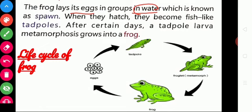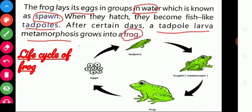That group of eggs is said to be spawn. When they hatch, they become fish-like tadpoles. Tadpoles look like fish — they have a fish structure. After certain days, a tadpole larva undergoes metamorphosis and grows into a frog.